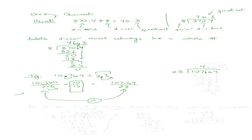Let's go ahead and divide. How many times does 23 go into 107? It goes 4 times. 4 times 3 is 12, carry the 1. 4 times 2 is 8, and 1 is 9. I get a remainder of 15. Bring down the 6. Remember the role of the decimal point is to simply move up to the quotient. How many times does 23 go into 156? It goes 6 times. 6 times 3 is 18, carry the 1. 6 times 2 is 12, and 1 is 13. I get a remainder of 18.